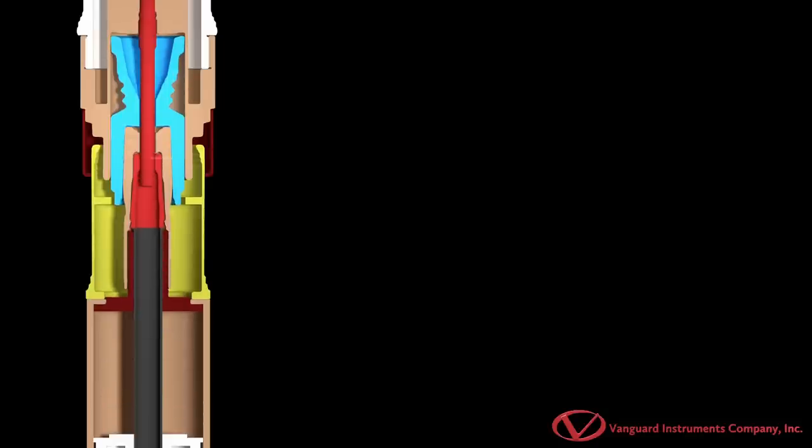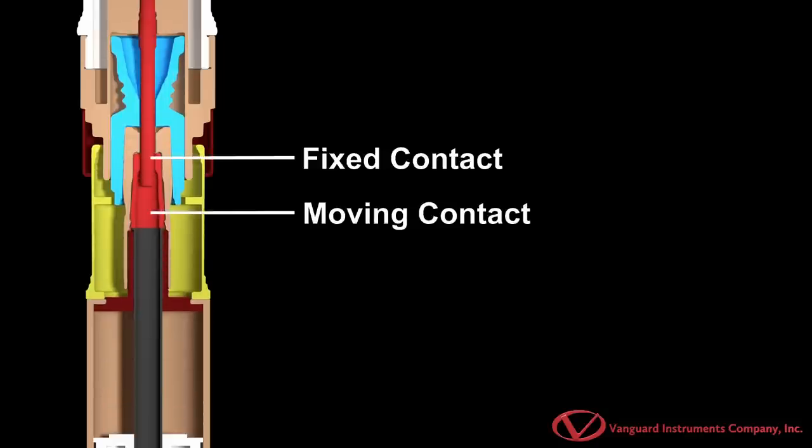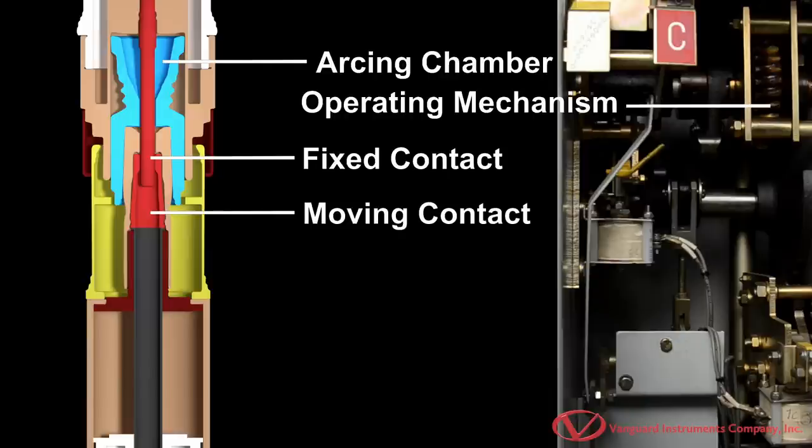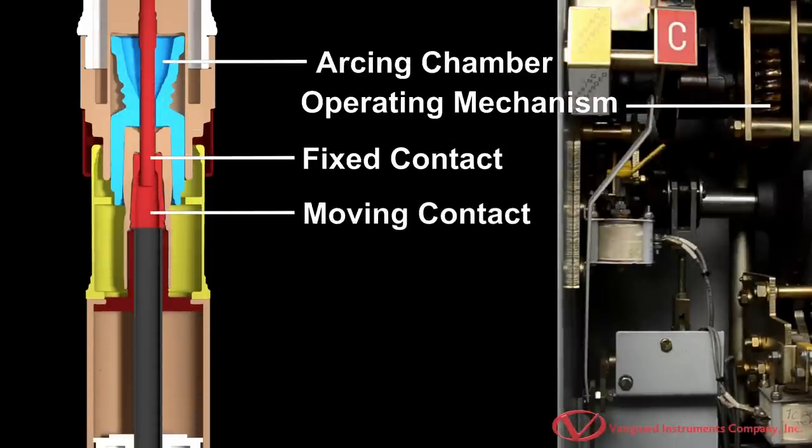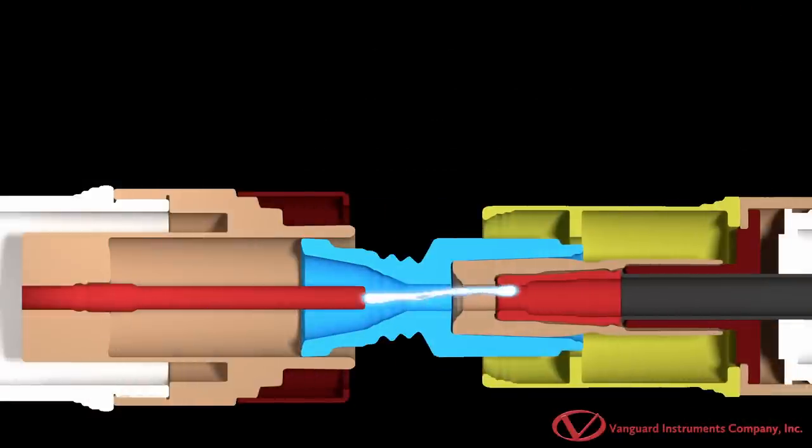Circuit breakers feature fixed and moving contacts that are housed in an arcing chamber and are opened or closed by an operating mechanism. The breaker's operating mechanism controls the moving contact to quickly open or close the circuit. When the contacts open, an arc is created due to current interruption.